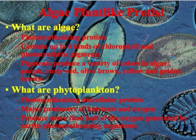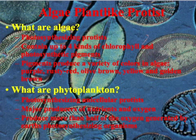So the second part of this, we're going to look at algae-like or plant-like protists, which are also algae. First of all, when we look at algae, what is it? Most of you think of it as a plant — it's actually not. It's a photosynthesizing protist. It contains up to four kinds of chlorophyll and photosynthetic pigments. So we typically think of it as being green, but those pigments can be a variety of colors.